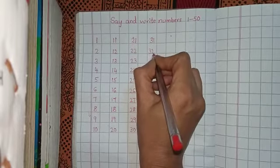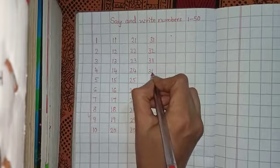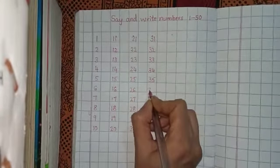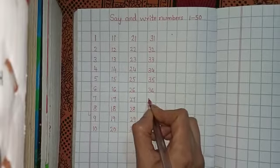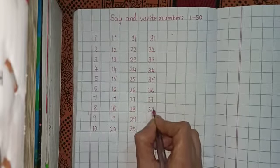Next one is 31, 32, 33, 34, 35, 36, 37, 38.